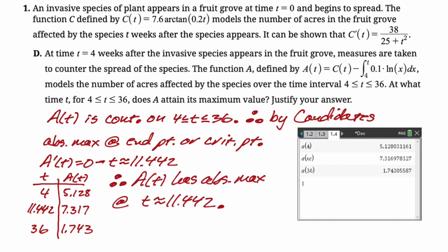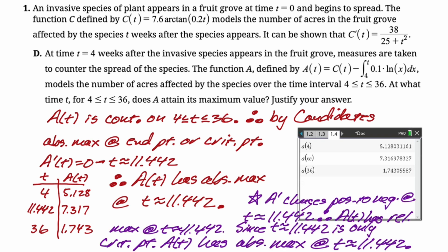So you can see that the biggest value occurs at 11.442. So that's the absolute maximum, and we're done. When I graphed this thing, I saw there was actually only one critical point on the interval. So an alternative solution to this, which is actually my preferred solution,